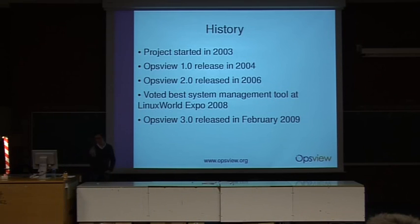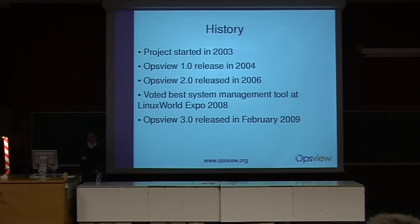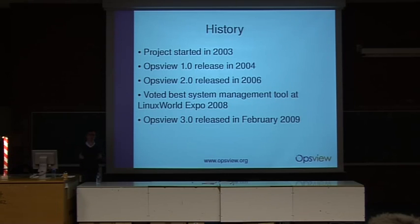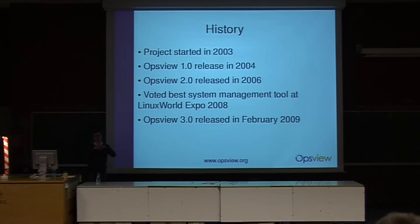A bit of history: the project was started in 2003 and it really came out of working with Nagios on some projects, where the people we were doing projects for said Nagios is great but it'd be excellent if it could do these extra things and maybe have a web UI to configure and manage the system. That's what started the OpsView project — initially just a bunch of bolt-ons to Nagios, but quite soon it became a more integrated framework for managing configuration and pulling together all the underlying components in a coherent system. It isn't just add-ons to Nagios — there's actually quite a large amount of code sitting around it now.